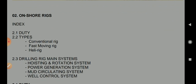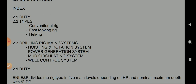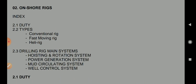For onshore rigs, the types are conventional and fast moving rig. In the next video we will see what the drilling rig main systems are: hoisting and rotation system, power generation system, mud circulation system, and well control system. Some videos on hoisting system, mud circulation system, and well control system have already been created.